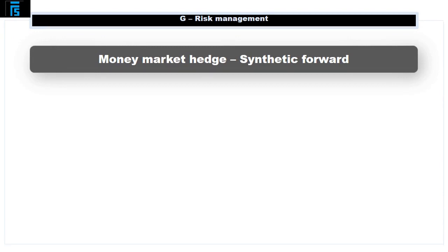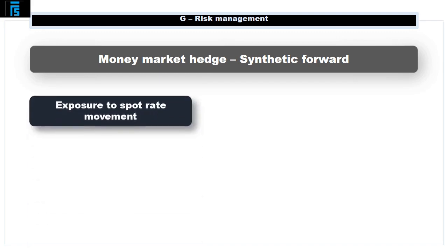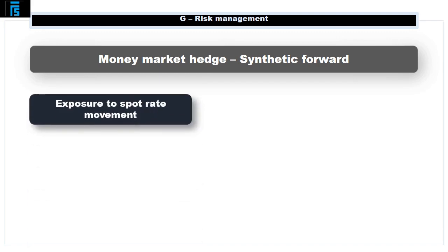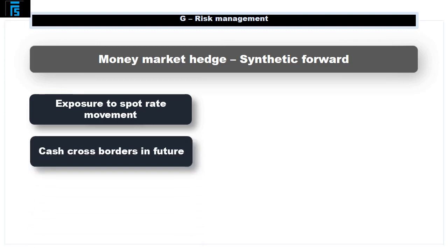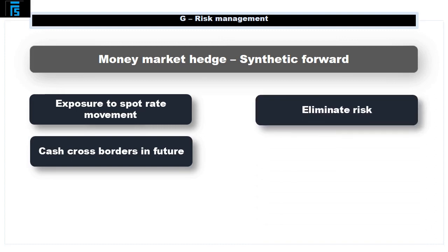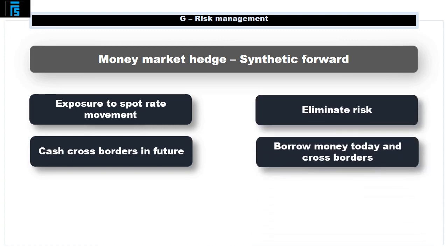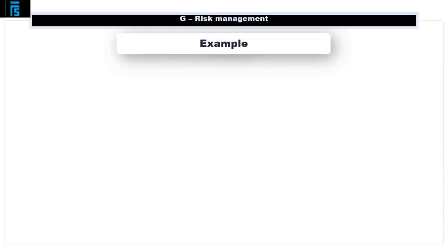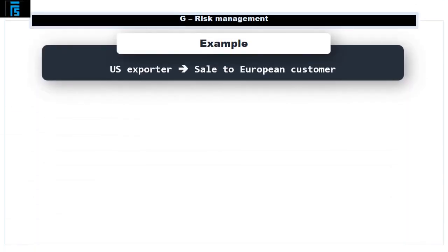Another external hedging technique is a money market hedge, sometimes known as a synthetic forward. The reason we're exposed to spot rate movements is that cash is going to cross borders at some point in the future as opposed to today. We can eliminate risk by borrowing the money now and crossing borders today instead. This is perhaps easiest to see by talking through an example.